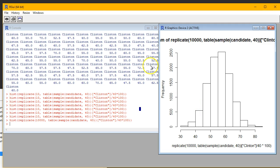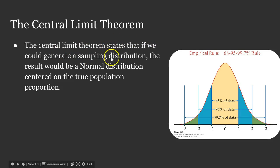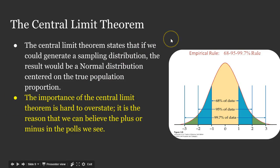Let's polish this off with the idea behind the central limit theorem. The central limit theorem, by definition, states that if we could generate a sampling distribution — and in reality, you're not going to repeat the same poll over and over again, it's just not cost effective — we only use the sampling distribution to help us better understand what the plus or minus should be for a result. But if we could generate a sampling distribution like we did in our simulation, we expect, because of the central limit theorem, that the result will always be a normal distribution centered on the true population proportion. That's some pretty powerful stuff. The importance of the central limit theorem is hard to overstate — it is the reason that we can believe the plus or minus in the polls that we see.